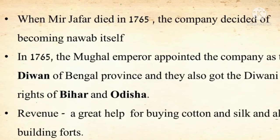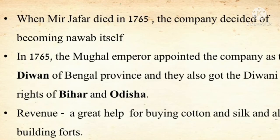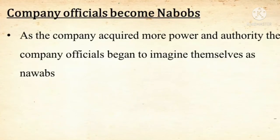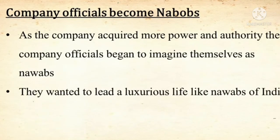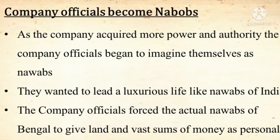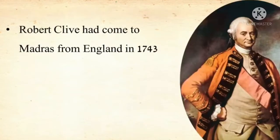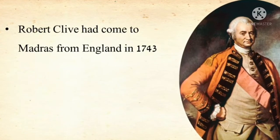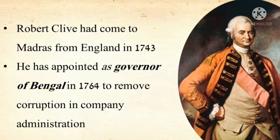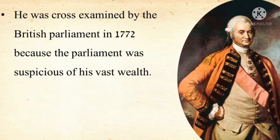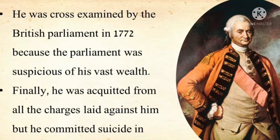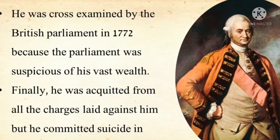Revenue was a great help for buying cotton and silk and also for building forts. Now the British got the Diwani rights and asserted themselves as Nawabs. As the company acquired more power and authority, company officials began to imagine themselves as Nawabs, wanting to lead a luxurious life. The company officials forced the actual Nawabs of Bengal to give land and vast sums of money as personal gifts. Robert Clive had come to Madras from England in 1743. He was appointed as Governor of Bengal in 1764 to remove corruption in company administration. He was cross-examined by the British Parliament in 1772 because the Parliament was suspicious of his vast wealth. Finally, he was acquitted of all charges but committed suicide in 1774.